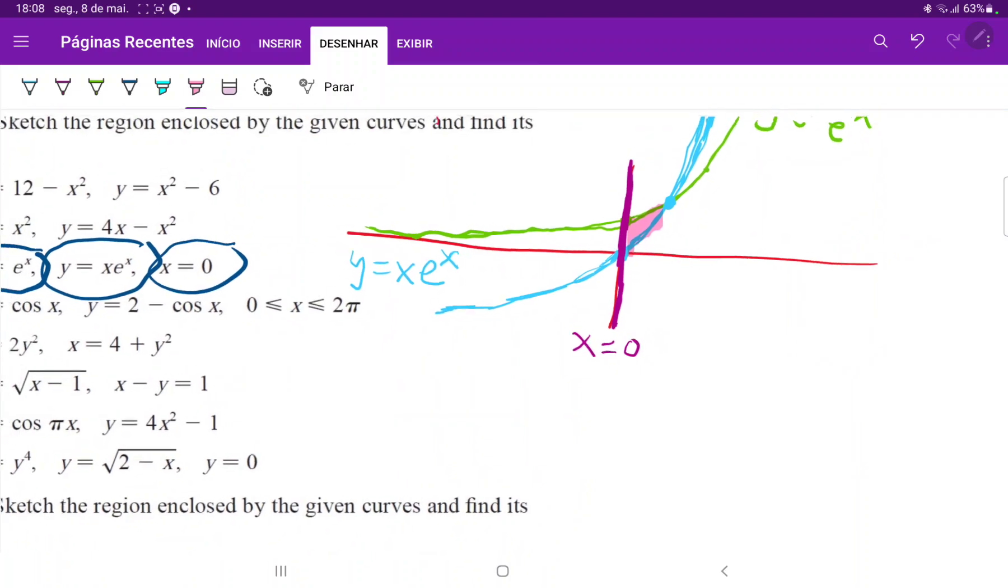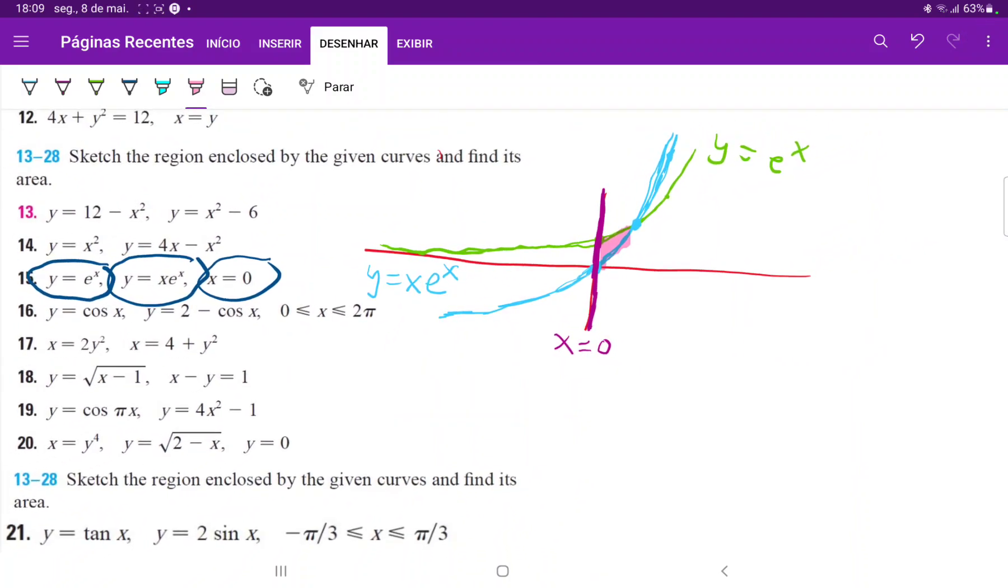So we can see that the bounds of integration, it begins at x equals 0, and then it ends at x equals 1, which is where we saw that they intersect. If you just wanted to test this out by yourself, analytically, you would just set these equal to each other. So you have x e to the x is equal to e to the x, right? And then we just factor it. I'll bring everything to the left-hand side.